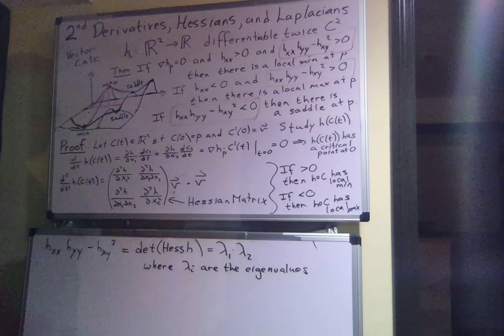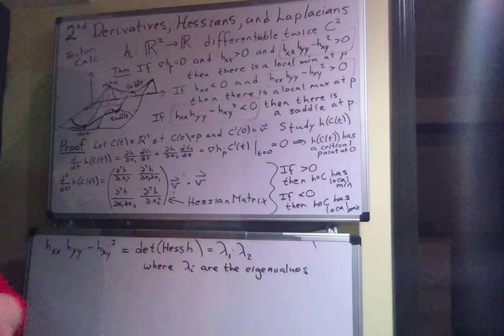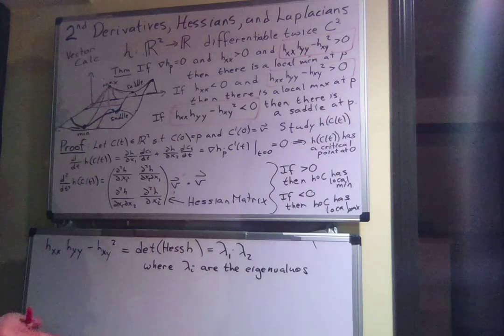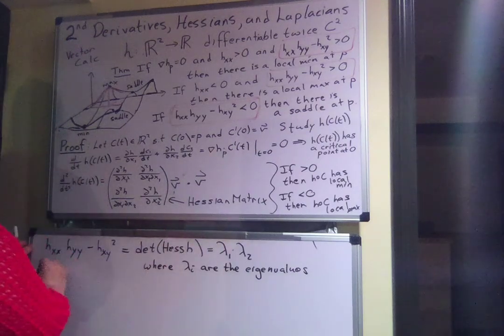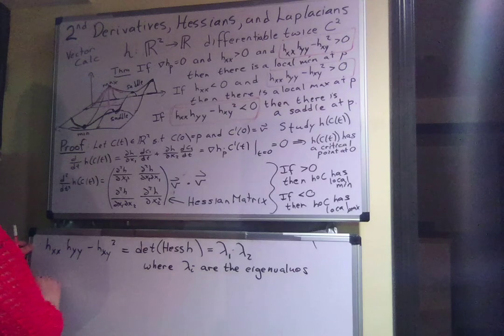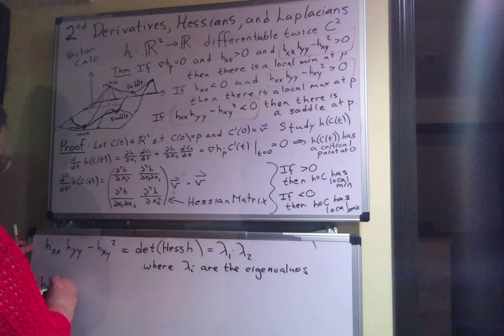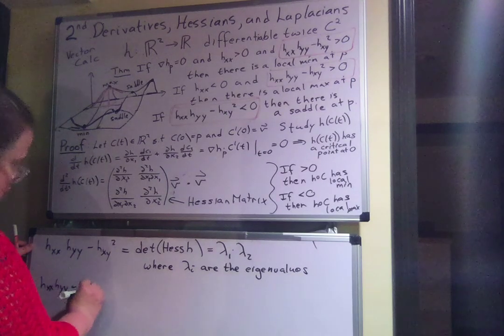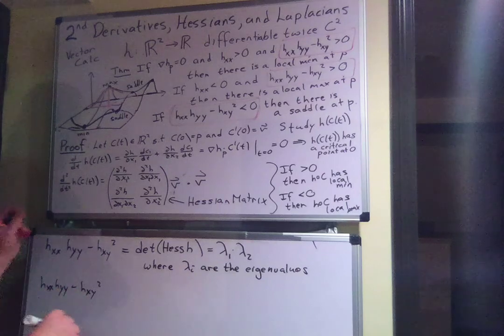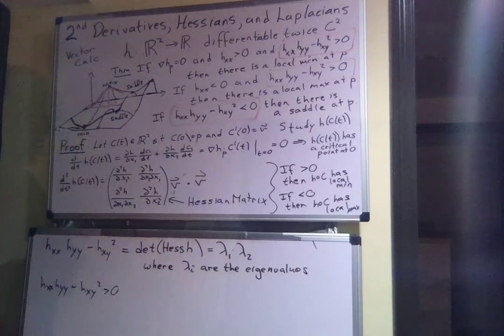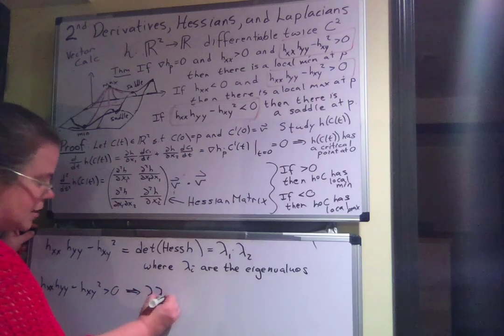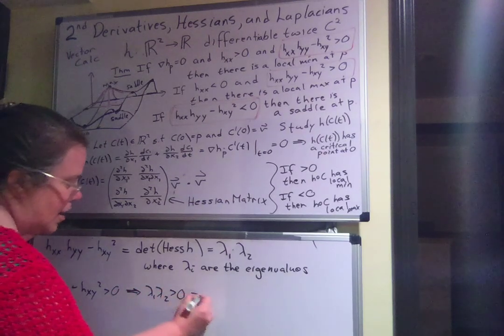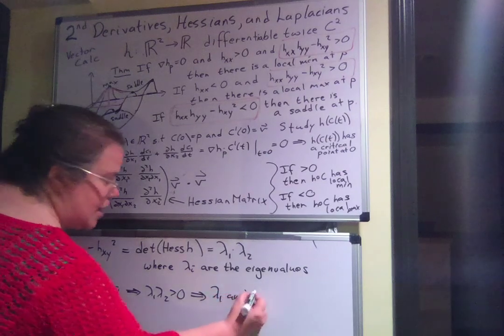If this is positive, what does it mean? If lambda 1 times lambda 2 is positive, that means they're either both positive or they're both negative. So HXX HYY minus HXY squared positive implies lambda 1, lambda 2 have the same sign.